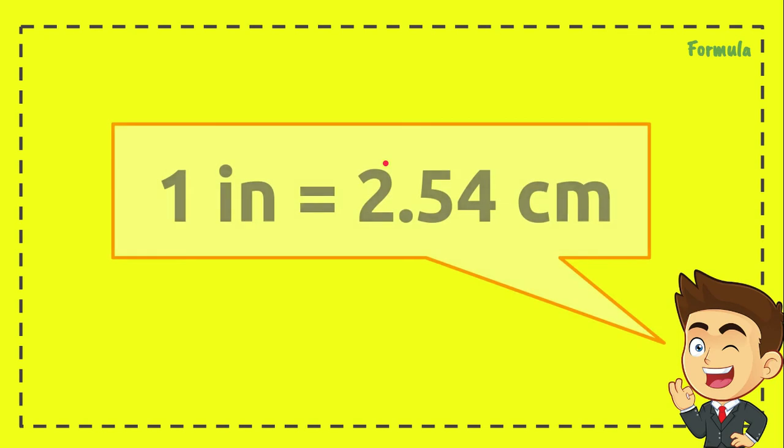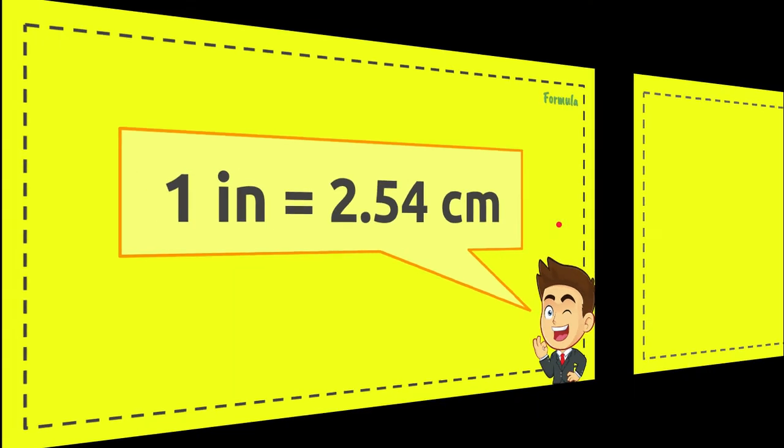Okay, the first thing that we need to know before we convert that number from inches to centimeters is the formula. And this is the formula of the conversion between inches to centimeters: 1 inch equals 2.54 centimeters. Okay, this is the conversion factor, or you can call it the formula as well.